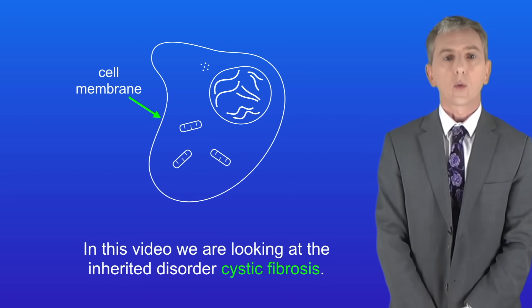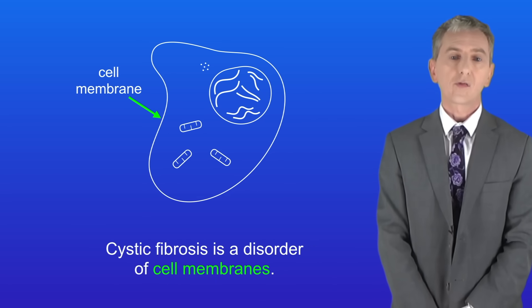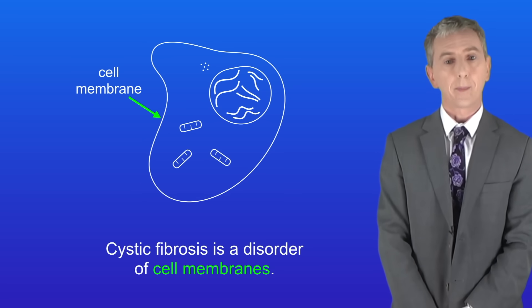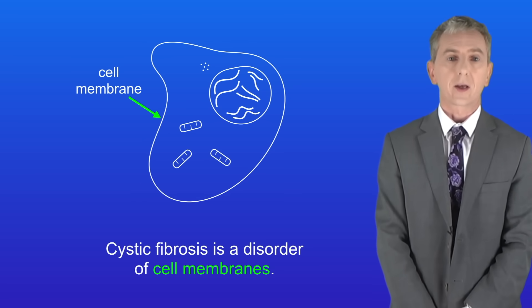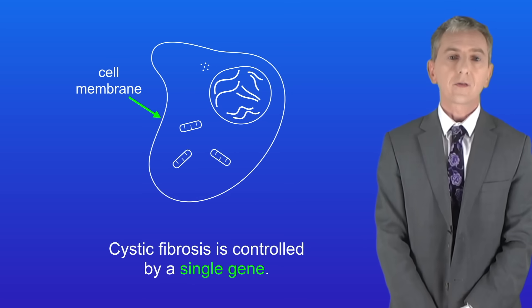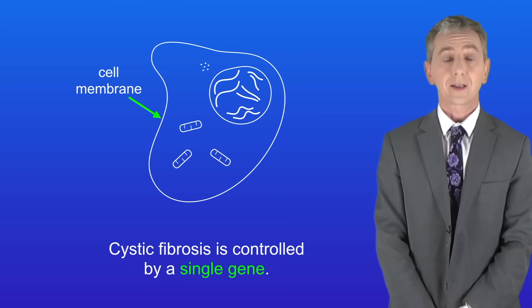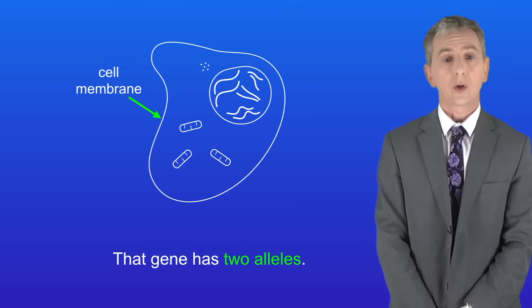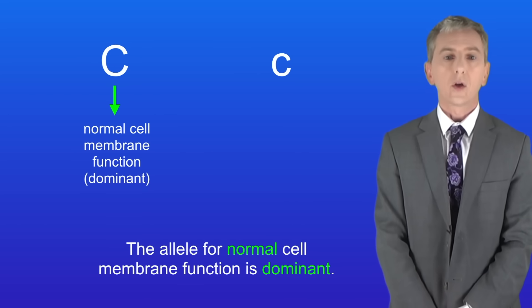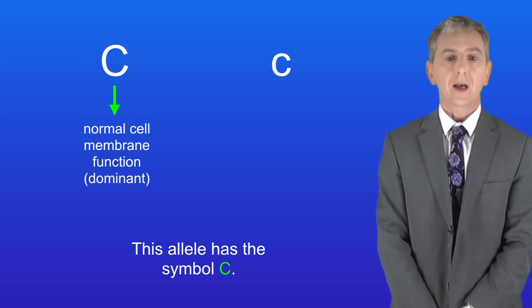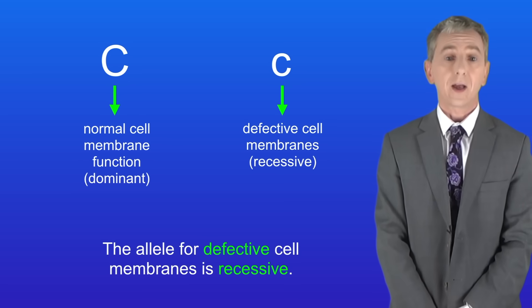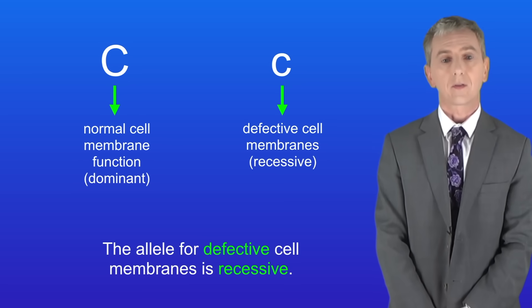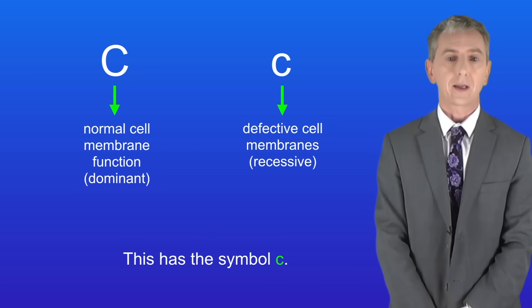In this video we're looking at the inherited disorder cystic fibrosis. Cystic fibrosis is a disorder of cell membranes — you could be asked that in your exam. Cystic fibrosis is controlled by a single gene and that gene has two alleles. The allele for normal cell membrane function is dominant and has the symbol capital C. The allele for defective cell membranes is recessive and has the symbol lowercase c.